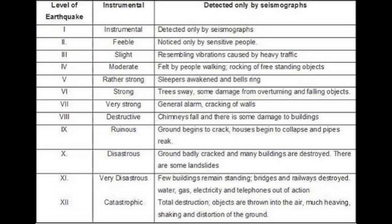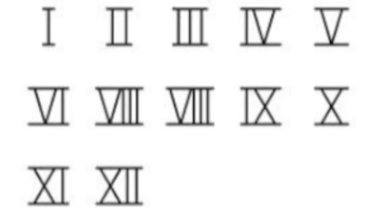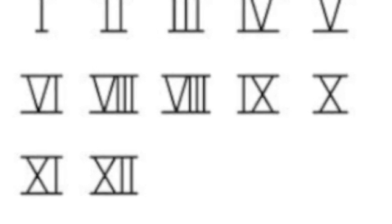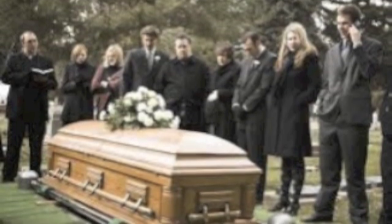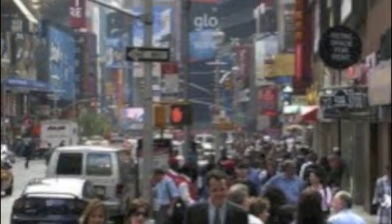Next, we got the Mercalli. You probably think it's stupid, but I'll make you love it — call me Cupid. It was invented in 1902, and that's not false, it is true. It measures the effects caused by a quake, like the damage on the buildings, not a rake. You measure by using Roman numerals. If it's an XII, there will be total destruction. It's only useful for a populated area, so you could use it in Bulgaria.